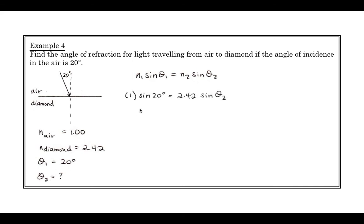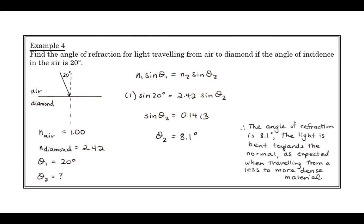And so we populate Snell's law with the values that we have. And we get theta 2 is equal to 8.1, which indeed is a much smaller angle, so our light has bent towards the normal in this case. And that's as expected when traveling from something less dense to something more dense.